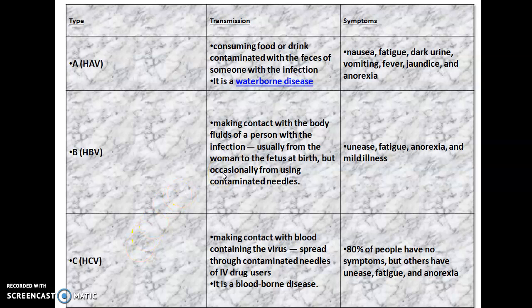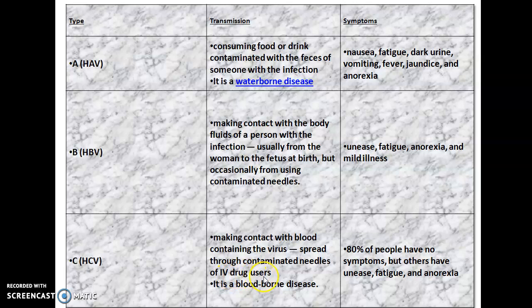The mode of transmission of Hepatitis B is making contact with the body fluids of a person with the infection — usually from the mother to the fetus at birth, but occasionally from using contaminated needles. For Hepatitis C, it is making contact with blood containing the virus, spread through contaminated needles of IV drug users. It is a blood-borne disease.